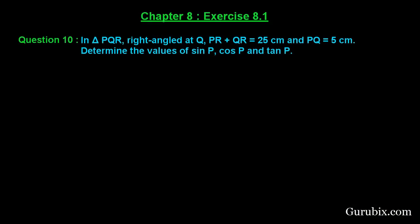Welcome friends, let us solve question number 10 of exercise 8.1 of chapter 8. The question says in triangle PQR, we are given a triangle PQR which is right-angled at Q. This is triangle PQR, here we have P, here we have Q, here we have R.